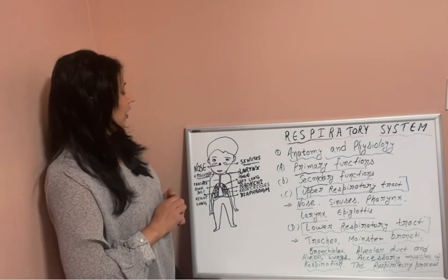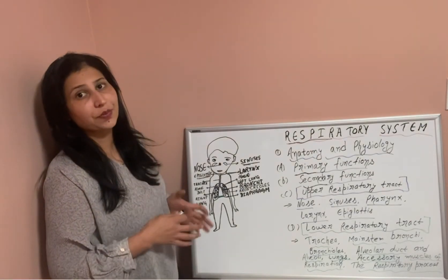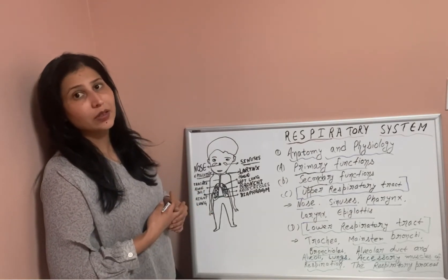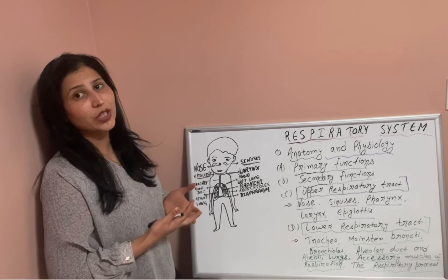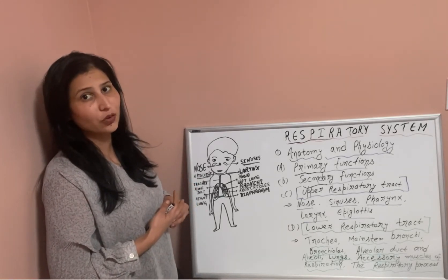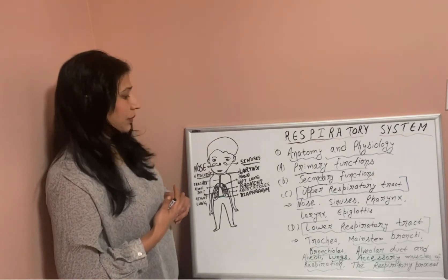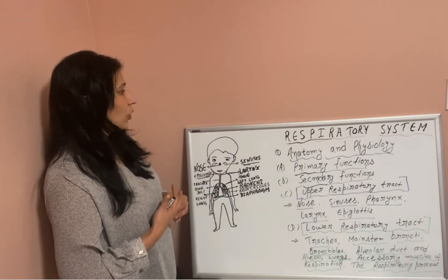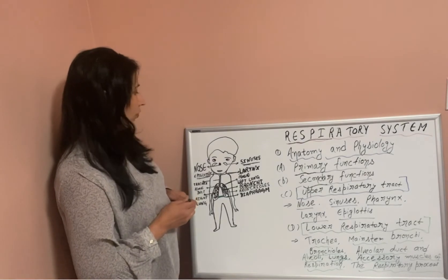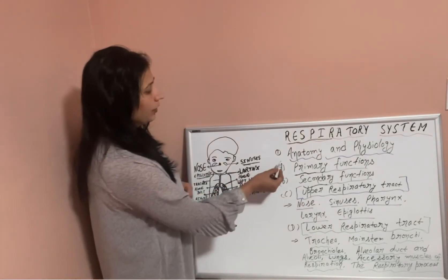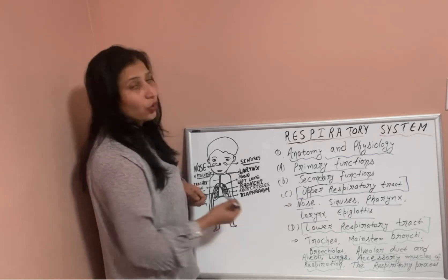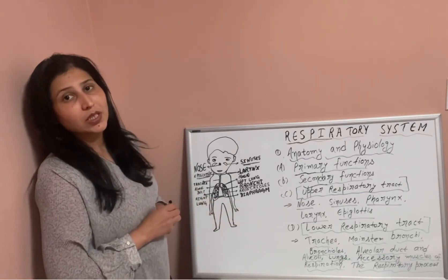After inspiration, all the respiratory muscles relax and the lungs recoil. This causes the expulsion of waste products like carbon dioxide from the body. That completes the respiratory process. In this video, we studied the anatomy, physiology, primary and secondary functions, and the upper and lower respiratory systems.